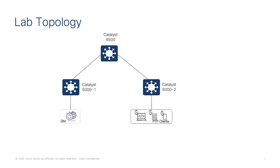Let's take a quick look in the lab on how to enable PTP on Catalyst 9000 switches. The topology consists of three switches. We have a PTP master connected to 9300-1, which acts as a master clock for this PTP domain, and a PTP client connected to 9300-2. Since the PTP master and client are spread across a layer 3 network, we will configure the Catalyst 9300s and 9500 for layer 3 transport mode and boundary clock to distribute the clock from master to client.